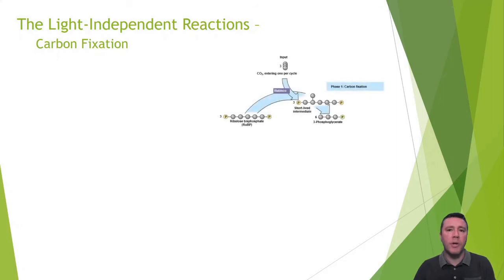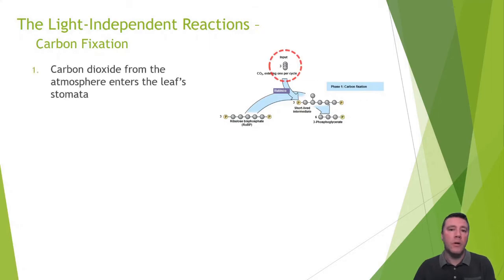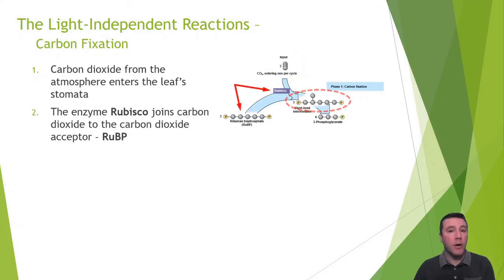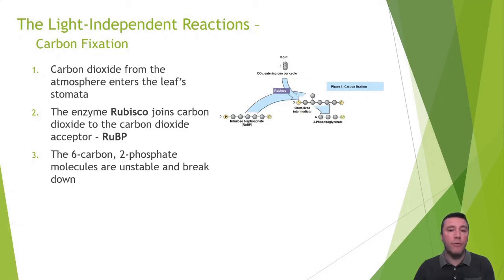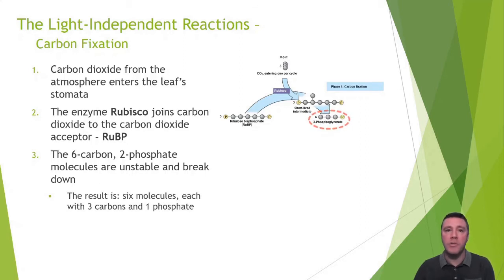It is important to note that for simplicity's sake, only the carbon atoms and the phosphates are being shown in the diagrams; the oxygen and hydrogen atoms are omitted to declutter. Carbon fixation involves carbon dioxide that has entered the leaf from the atmosphere through the leaf stomata. An enzyme called RuBisCO will join carbon dioxide to the CO2 acceptor, ribulose bisphosphate, or more simply, RuBP. RuBP is a five-carbon molecule containing two phosphates. Once the sixth carbon is added from carbon dioxide, that unstable six-carbon two-phosphate molecule breaks down. The result is six molecules, each containing three carbons and a single phosphate.